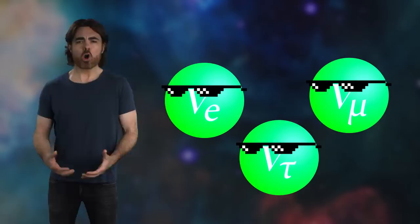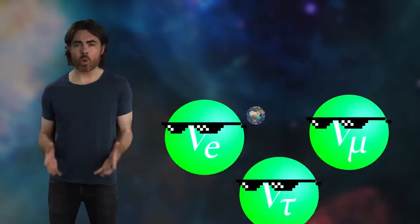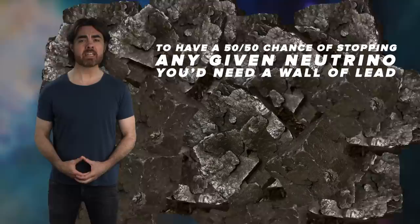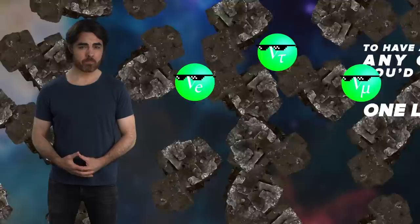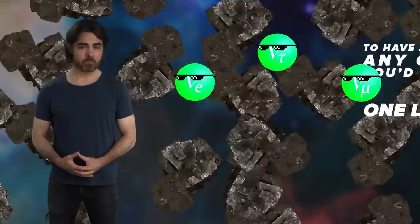Regular neutrinos are a bit aloof. They don't interact by the electromagnetic or strong nuclear forces, only by the weak nuclear force and gravity. They are so weakly interacting that they pass through matter like it isn't there. To have a 50-50 chance of stopping any given neutrino, you'd need a wall of lead one light year thick.